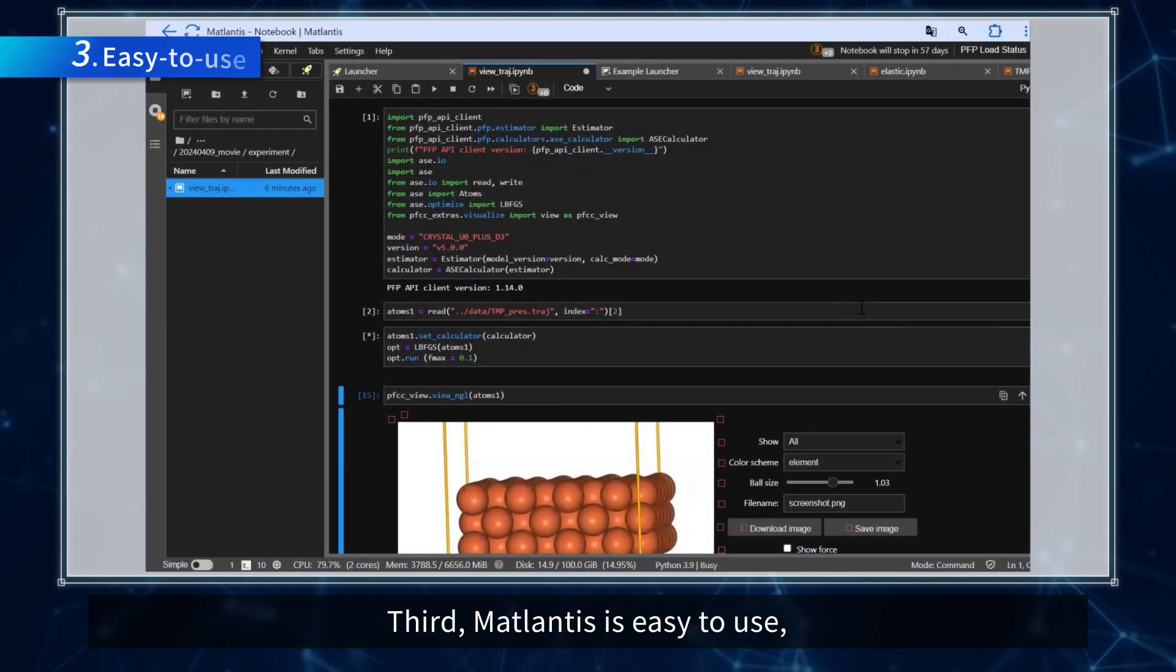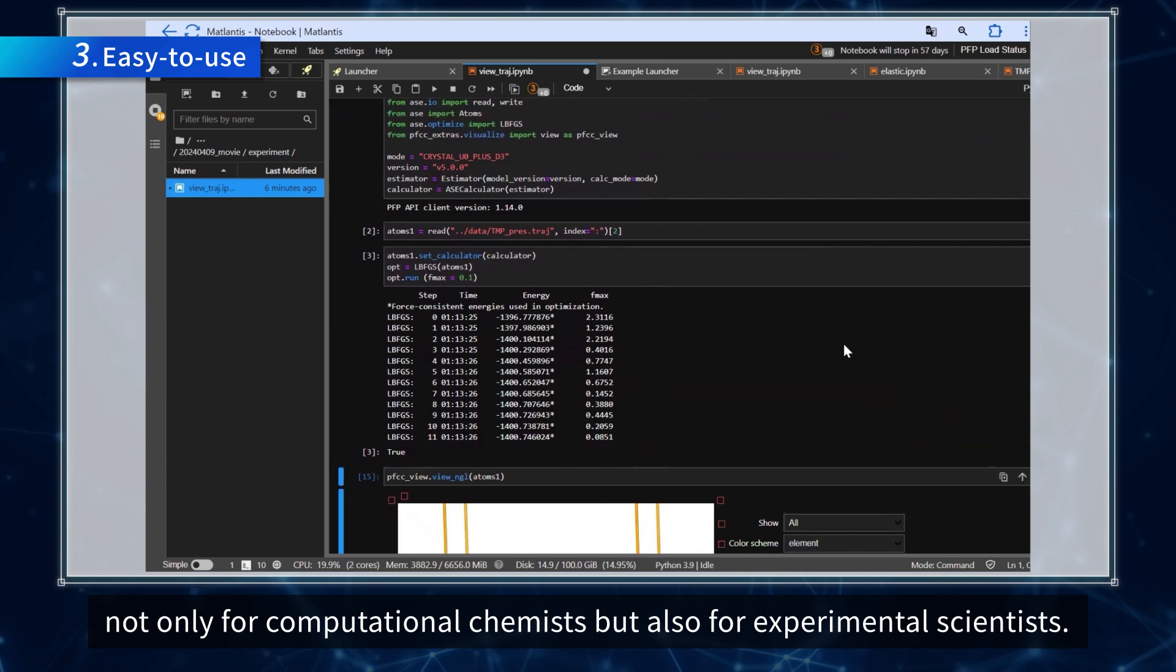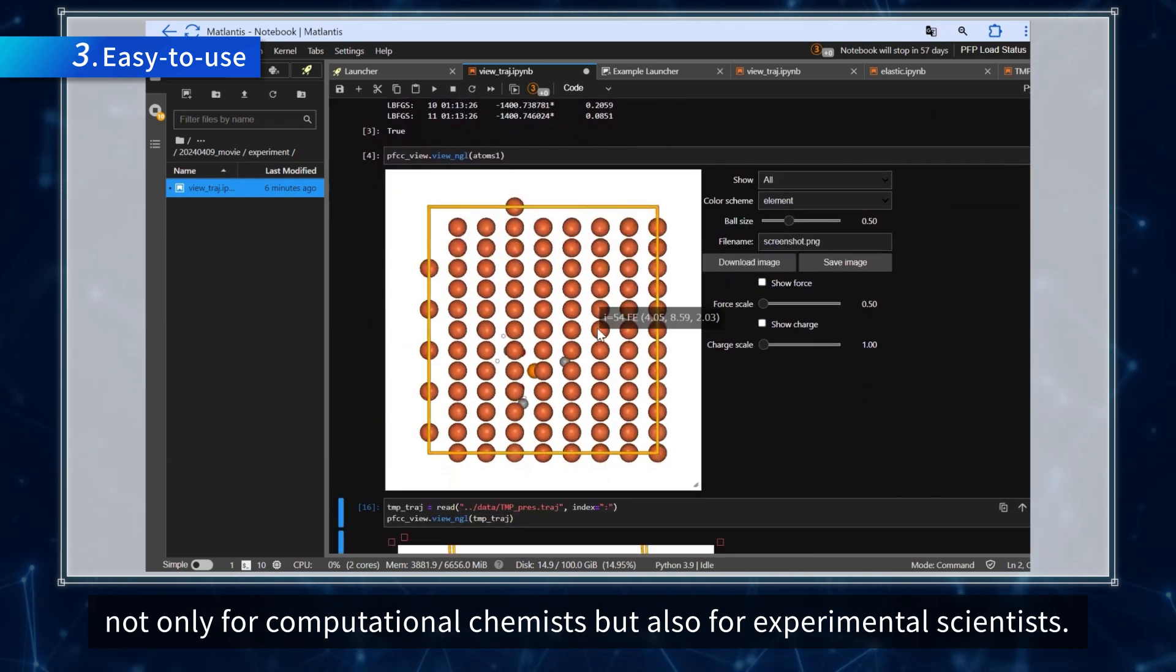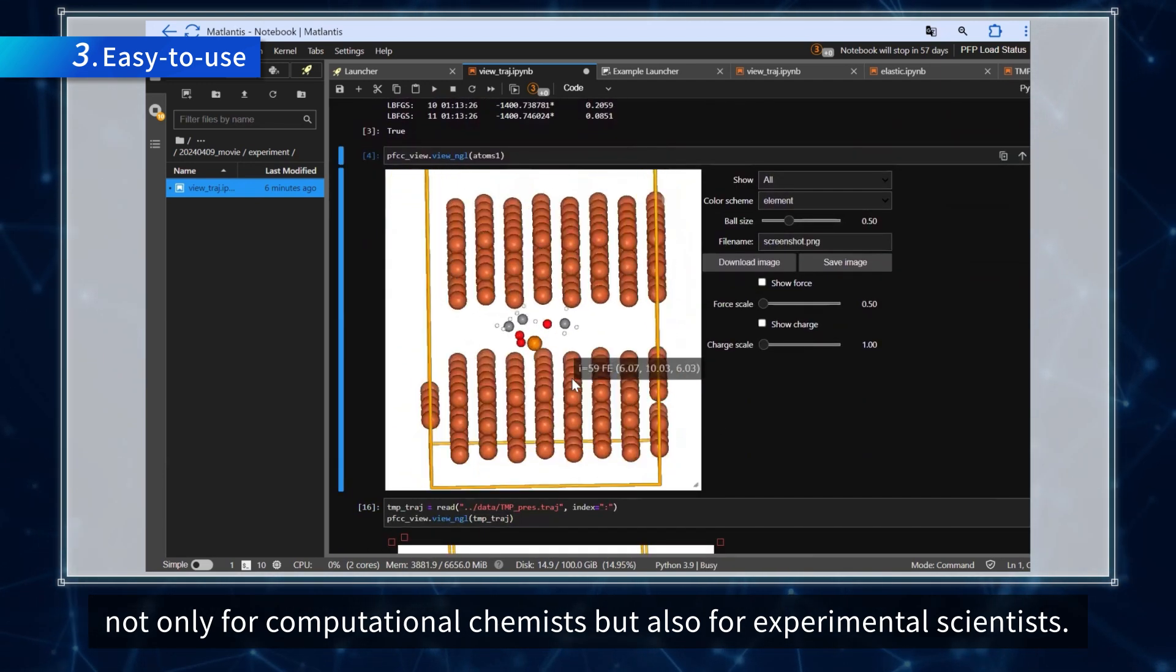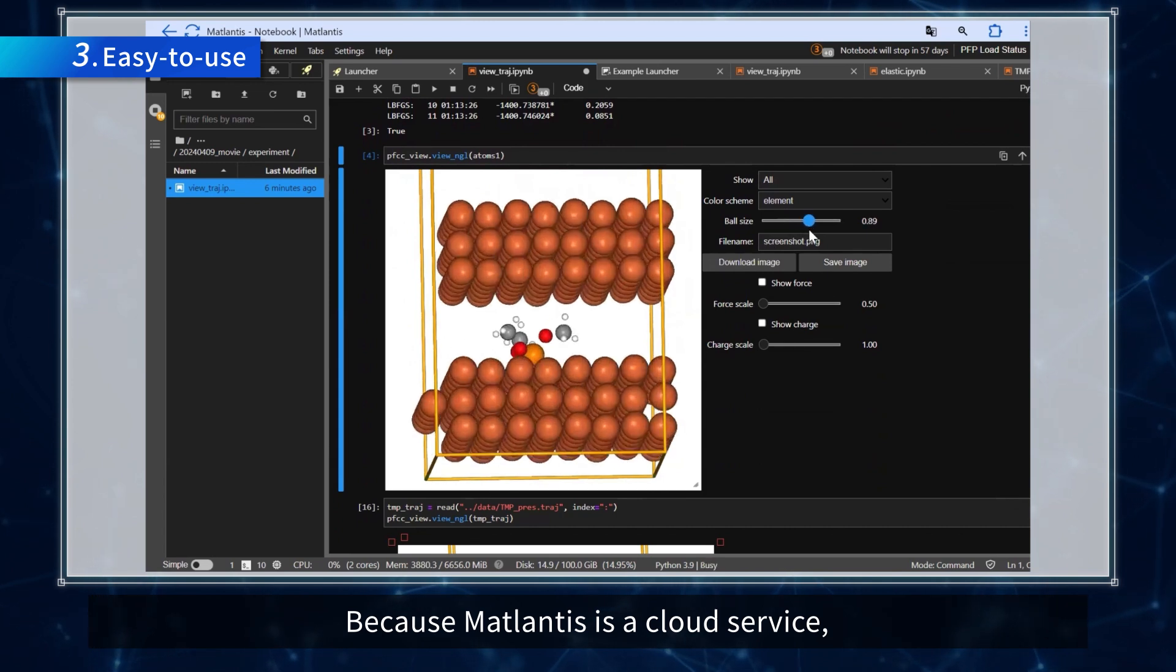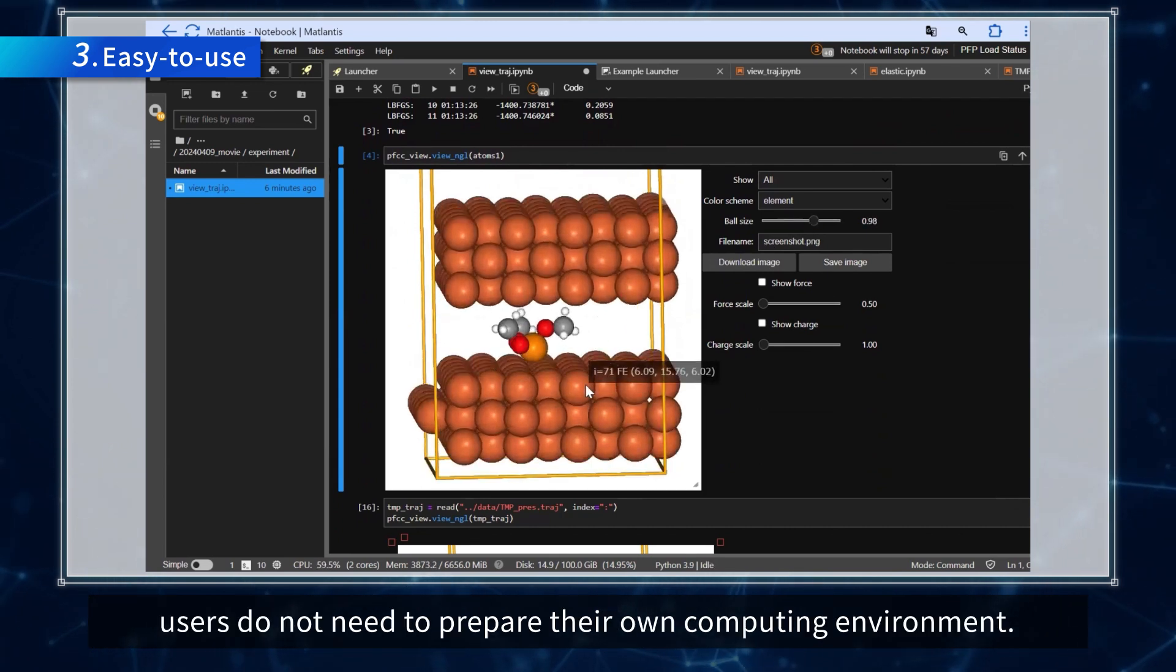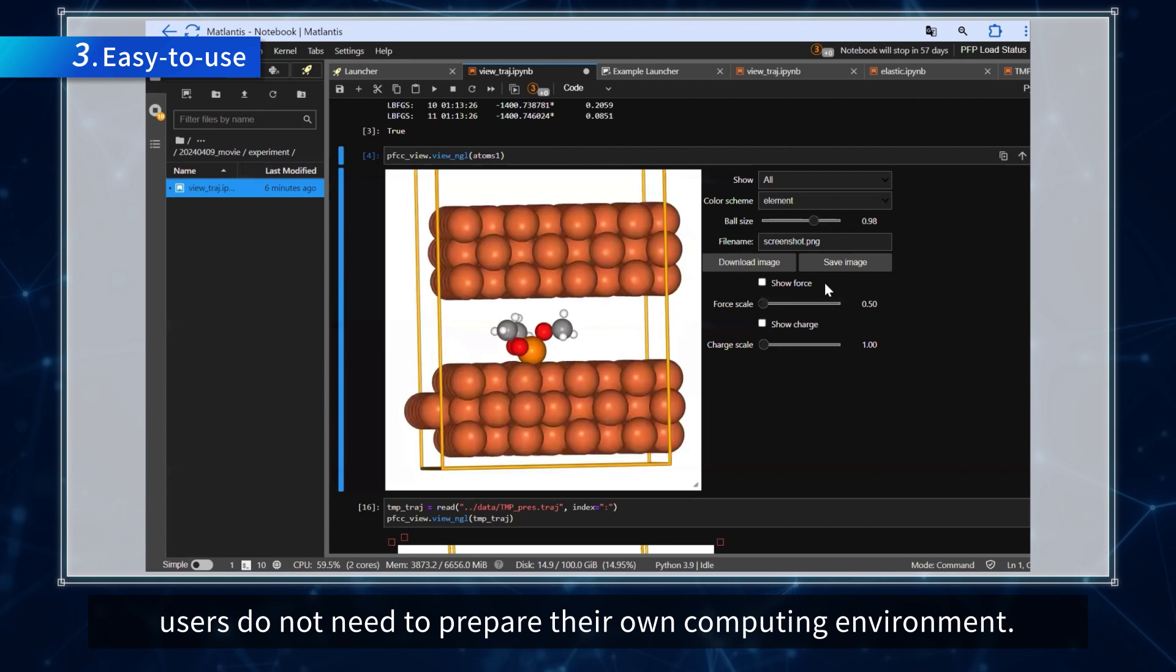Third, Matlantis is easy to use not only for computational chemists but also for experimental scientists. Because Matlantis is a cloud service, users do not need to prepare their own computing environment.